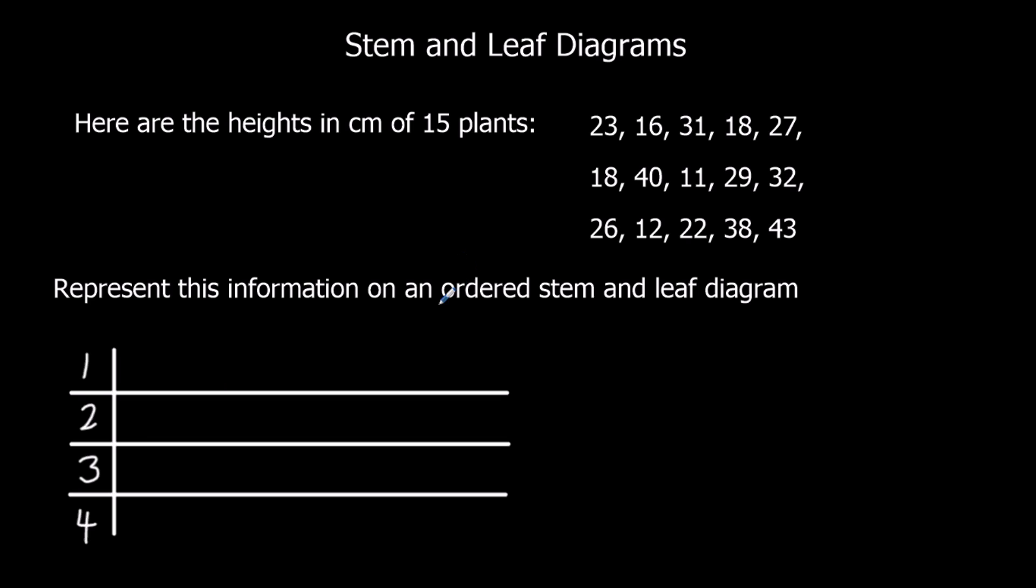We're going to write an ordered stem and leaf diagram. We'll write the numbers in order along here, but we're only going to write the units. We've already got the tens here, we just write the units next. We've got to go from the units of 0 to 1 to 2. We're going to start with the ones that are 0. So this is 40 here - 4, 0 - so 4, 0 means 40.